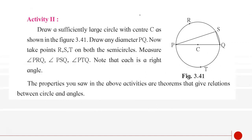Next activity: draw a sufficiently large circle with centre C as shown in figure 3.41. Draw any diameter PQ. Now take points R, S and T on both the semi-circles as shown in figure 3.41. When you try to measure these, you will find that each is a right angle.